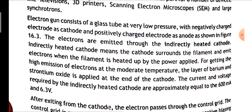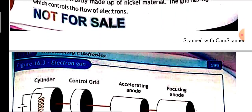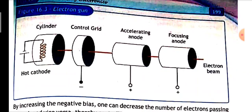Electrons are emitted through an indirectly heated cathode. The heated filament heats the cathode, which then emits electrons. These negatively charged electrons are attracted toward the positive anode.